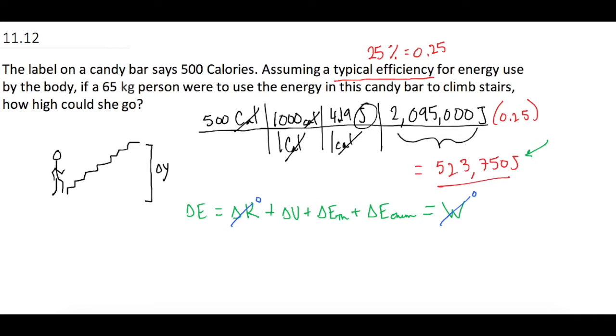All right, so, obviously, we're going to have some sort of change in gravitational potential energy. That's what we're trying to find, or what we're going to use to find the delta Y. And, we're heating up, definitely, if we're going to run up those stairs. And, we have the change in chemical energy, which is from the candy bar.